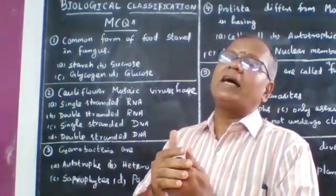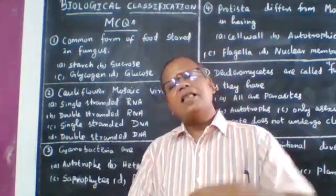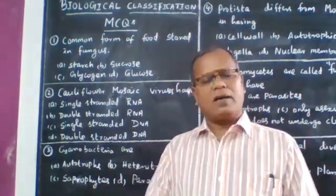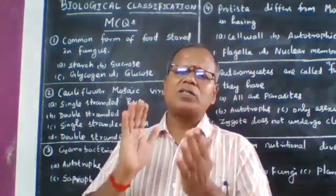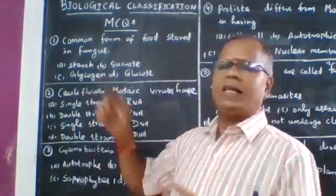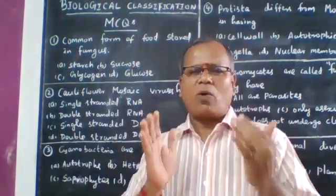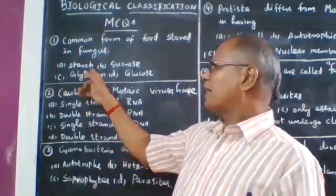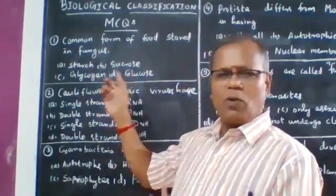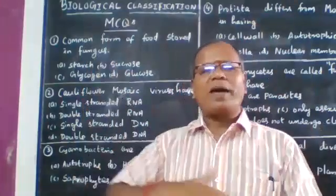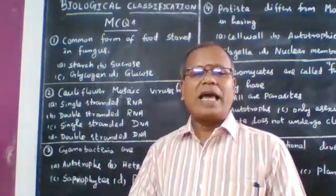They are heterotrophs - either saprophyte, parasite, or symbiont. Their storage carbohydrate is glycogen. Starch is found in plants; it is converted into sucrose, then into glucose where aerobic respiration takes place. So glycogen is the correct answer.